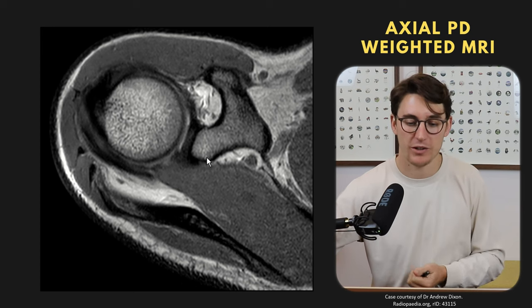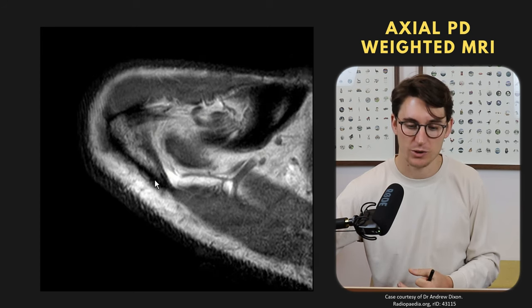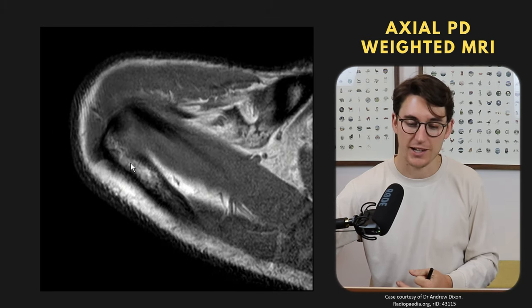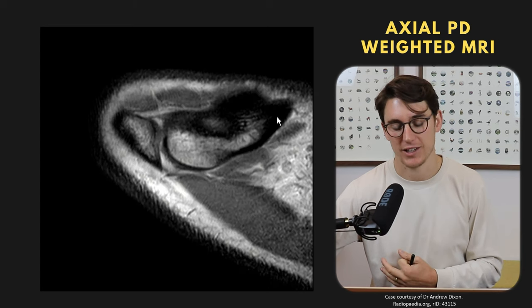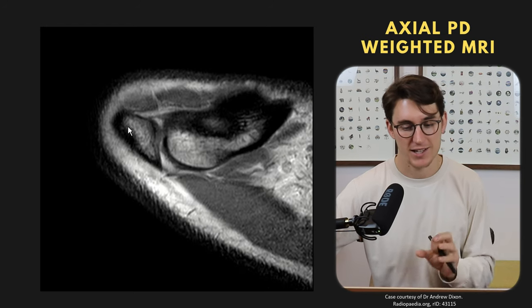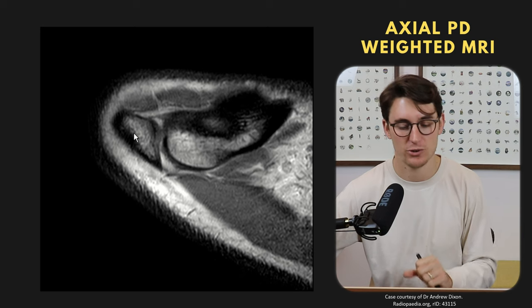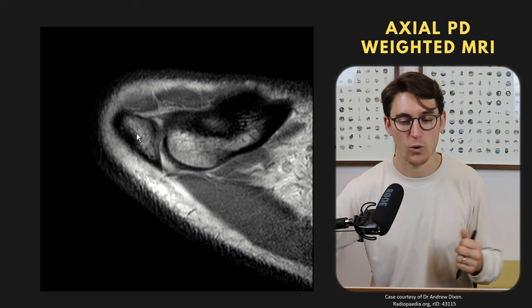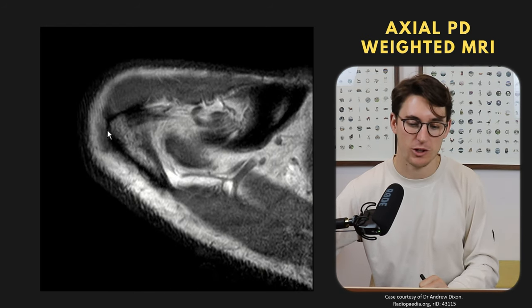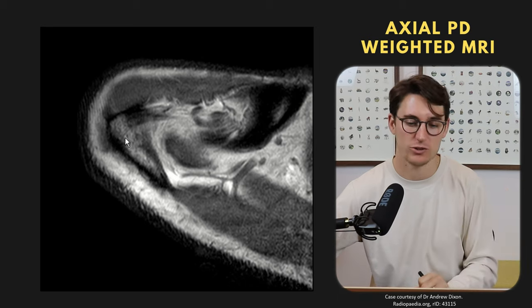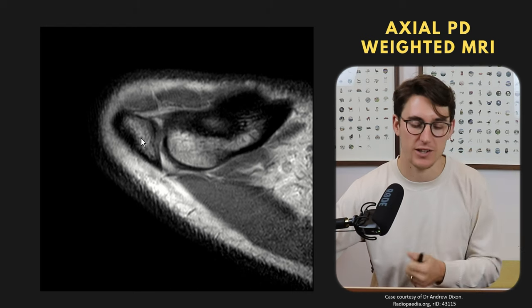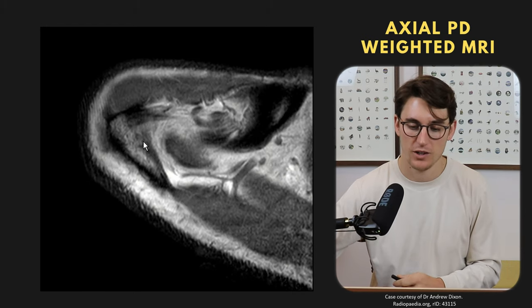Scrolling superiorly we should see the acromion come into view, coming back down to the spine of the scapula, and anteriorly articulating with the clavicle. Looking at the bones — sometimes we can have a separate os acromiale, a part of the acromion that has yet to fuse, either because we have a young patient or it's a normal anatomical variant. People with an os acromion can be more prone to impingement, so it's important to alert surgeons if present.